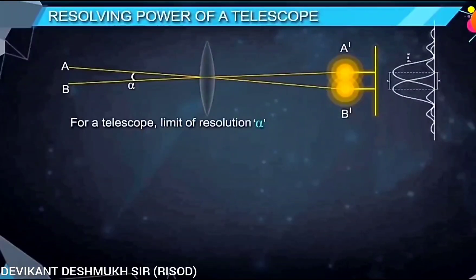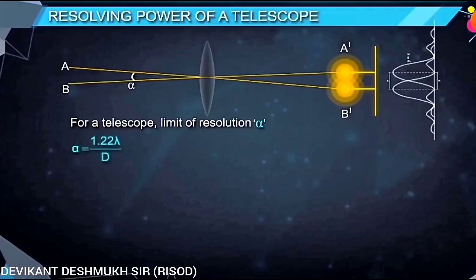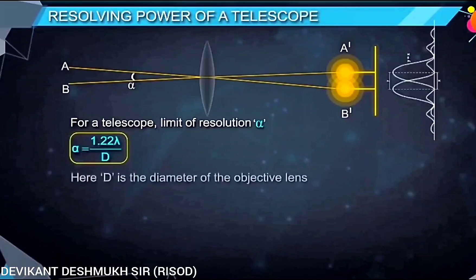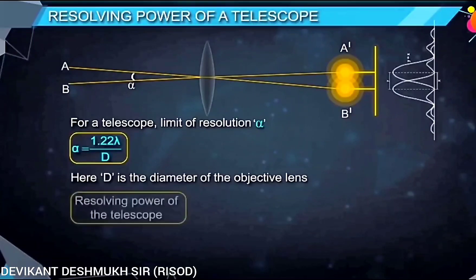For a telescope, the limit of resolution alpha is given by 1.22 lambda divided by D, where D is the diameter of the objective lens of the telescope.